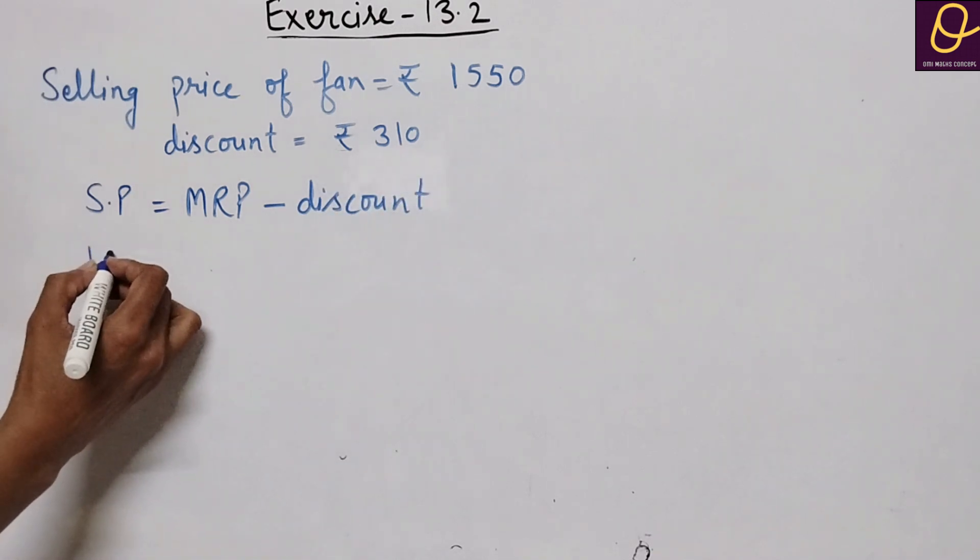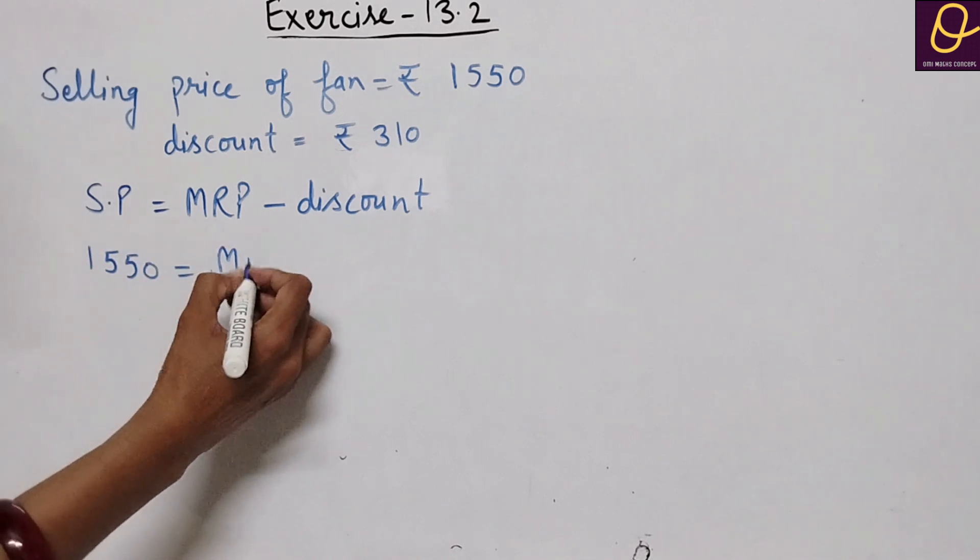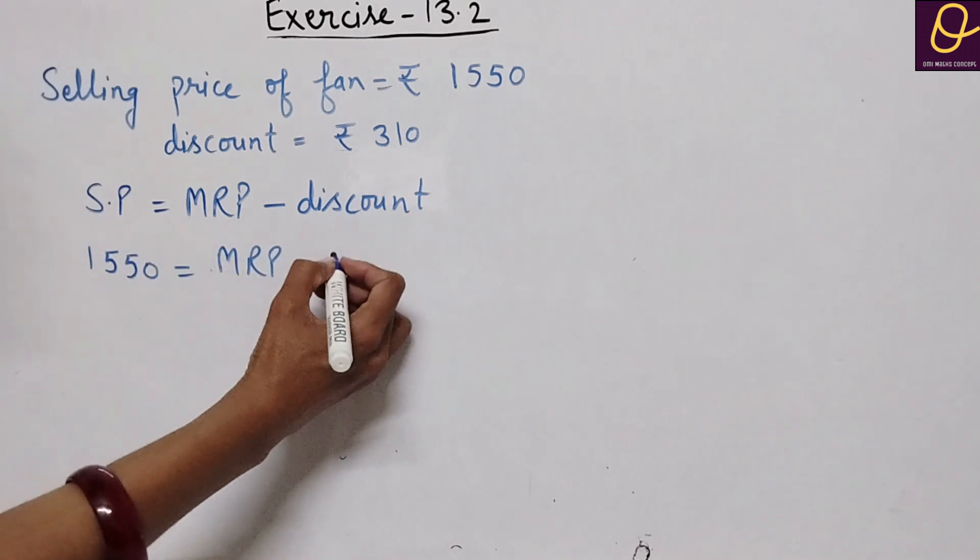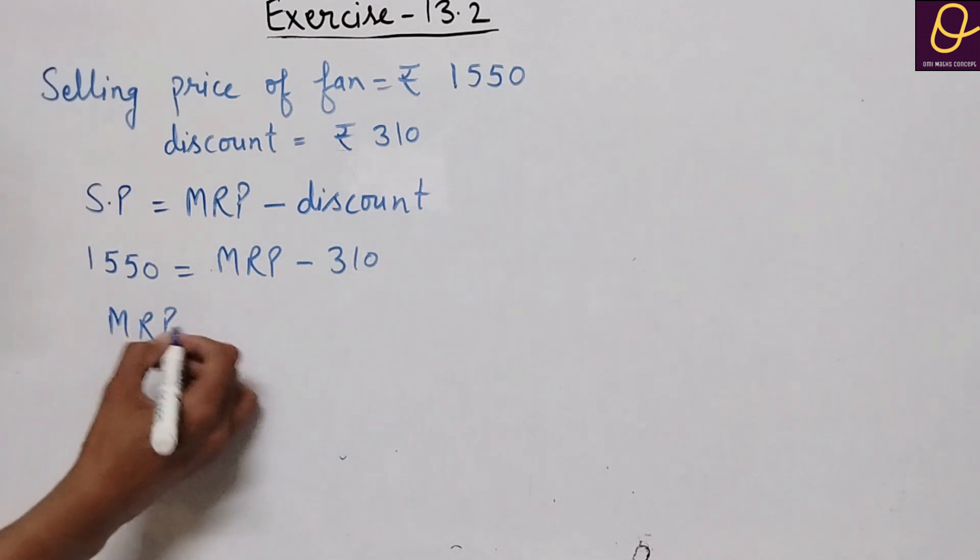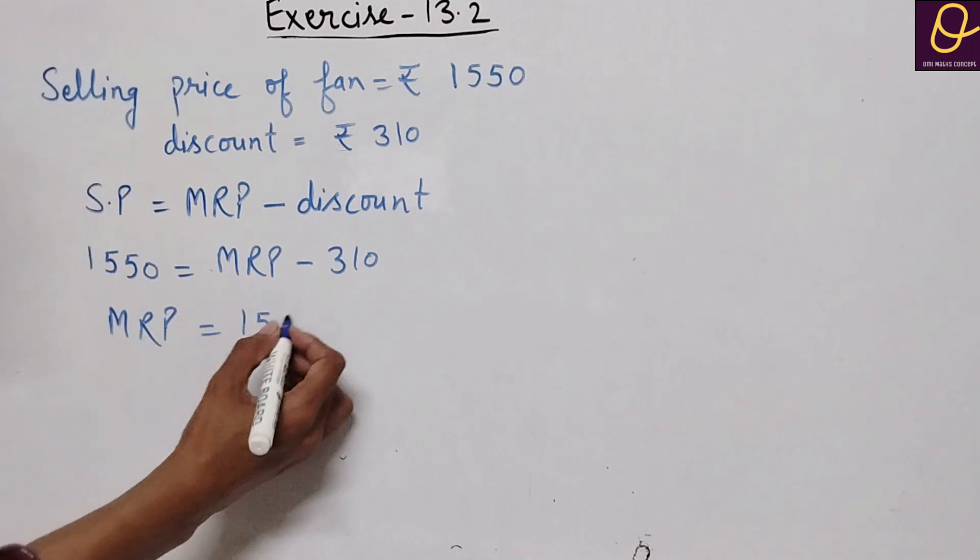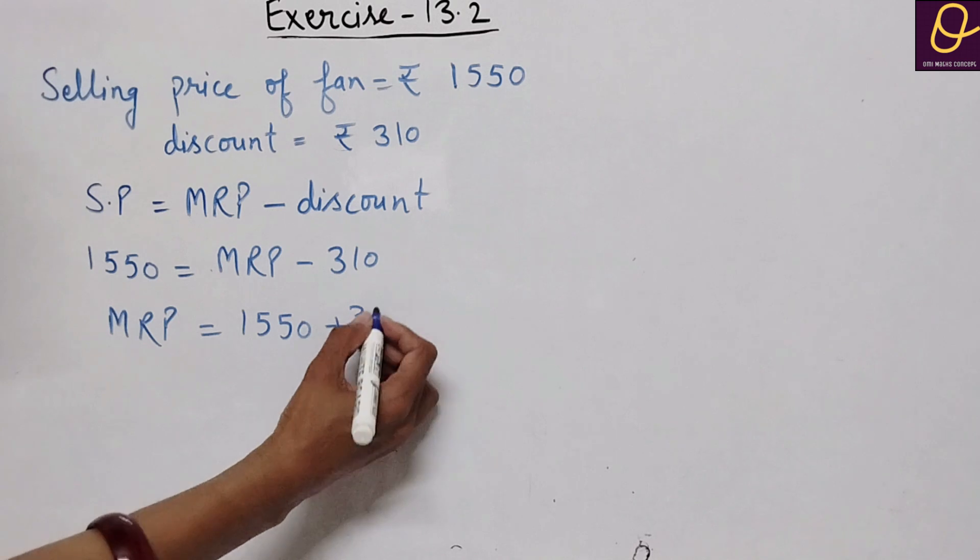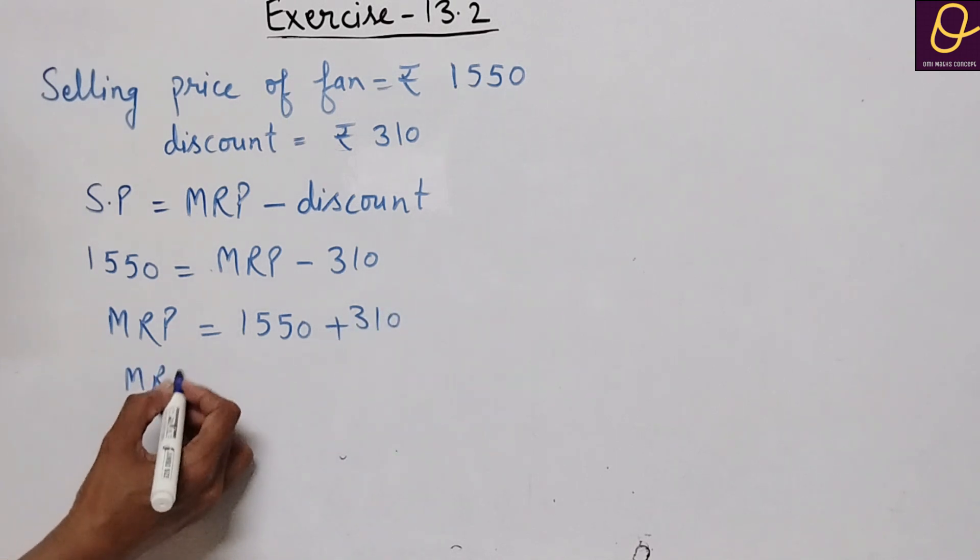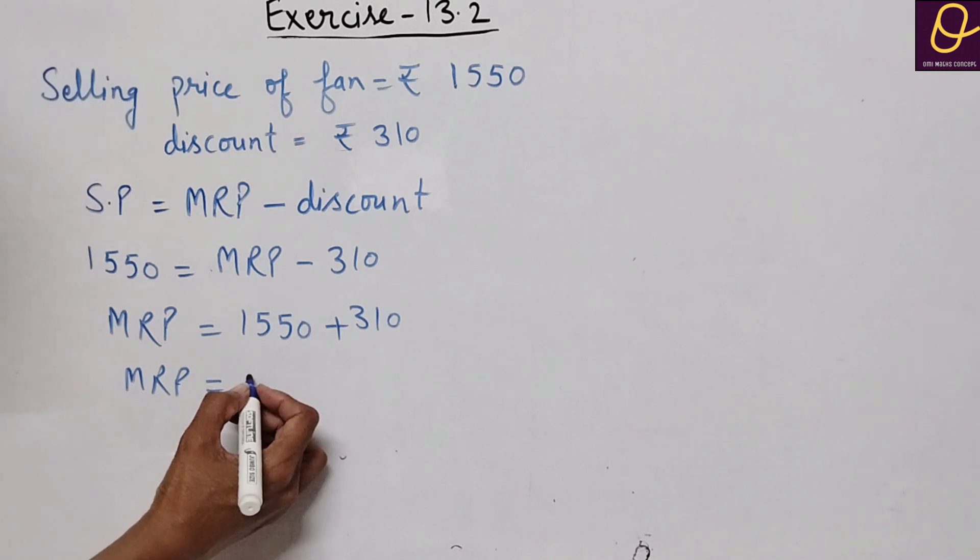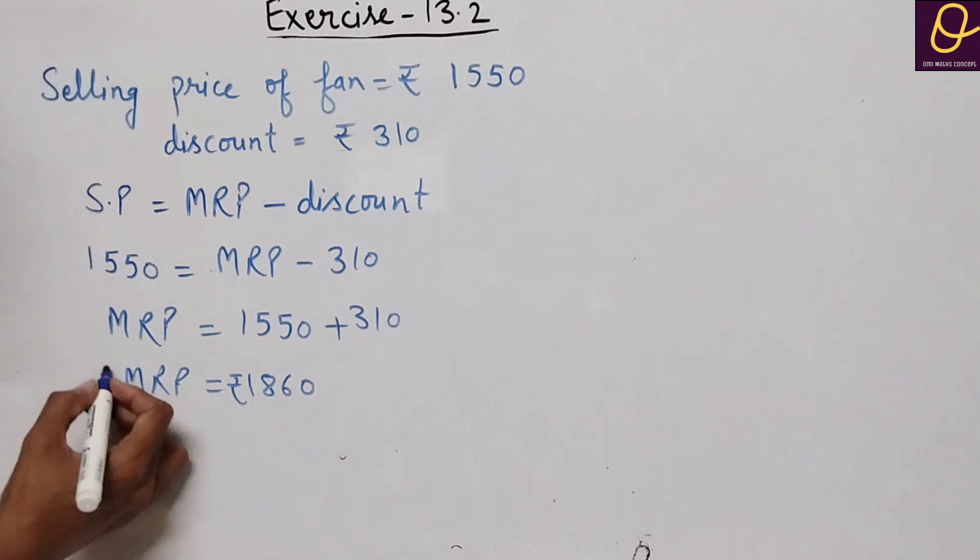So selling price is MRP minus discount. One thousand five hundred fifty equals MRP minus three hundred ten. So MRP equals one thousand five hundred fifty plus three hundred ten. MRP equals 1860 rupees. This is the MRP.